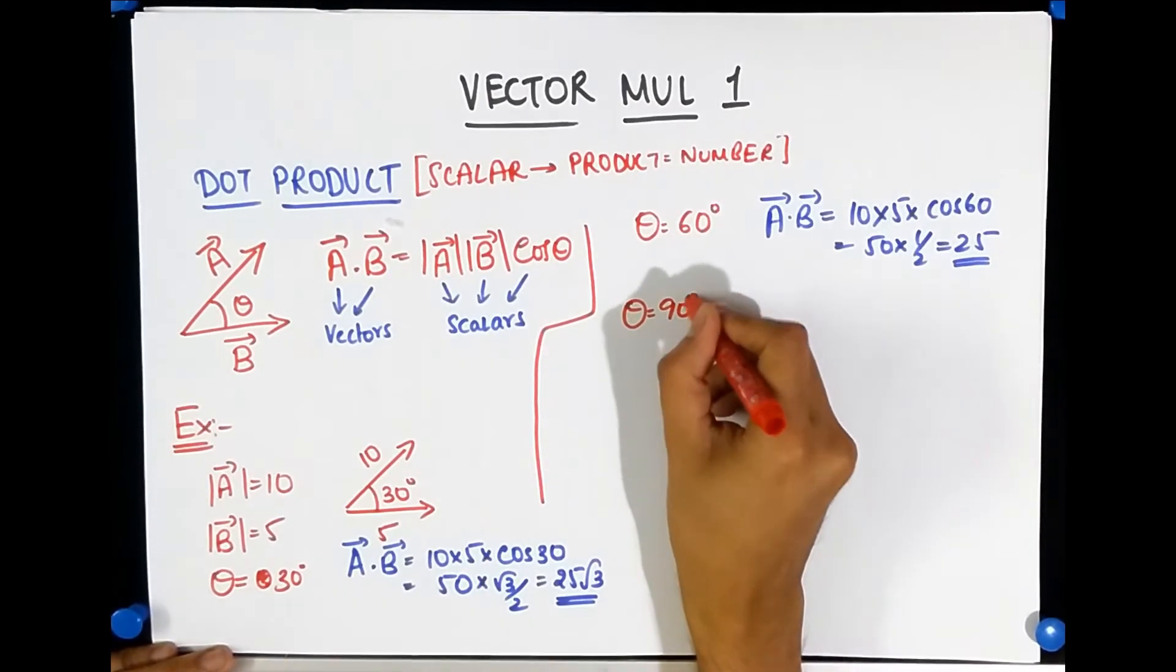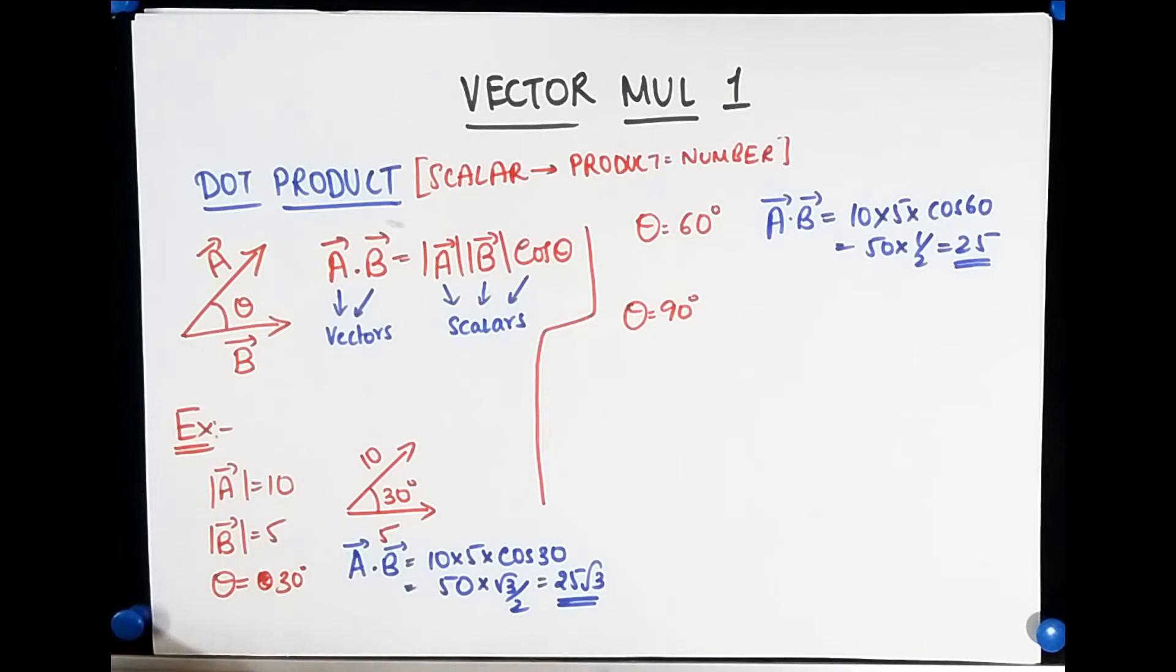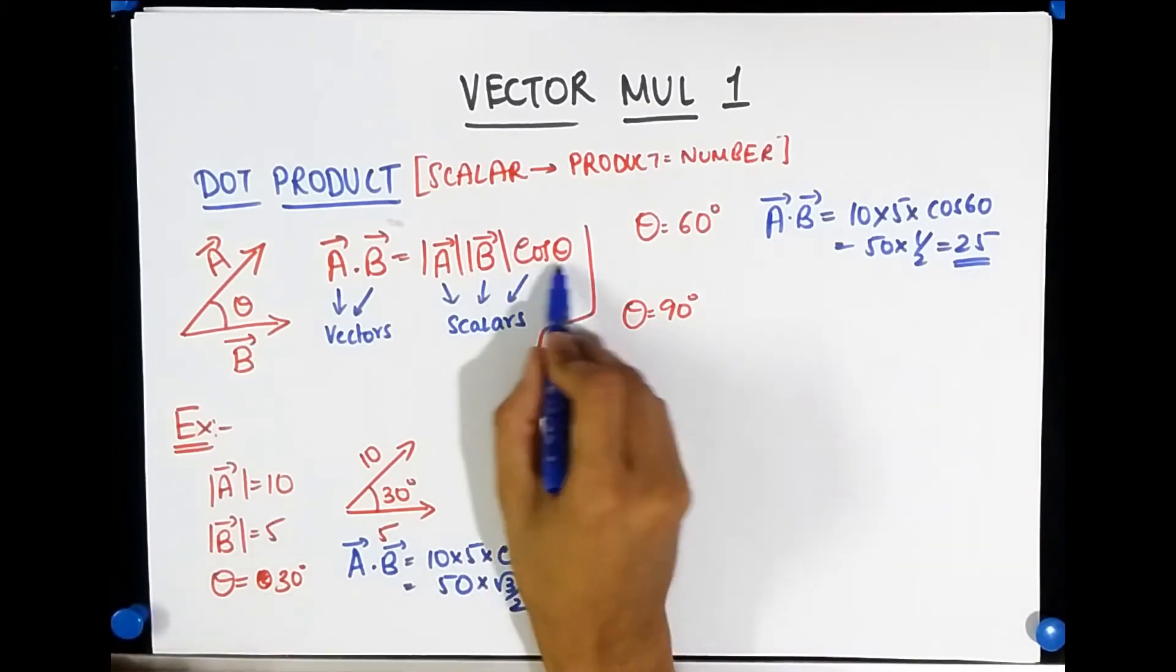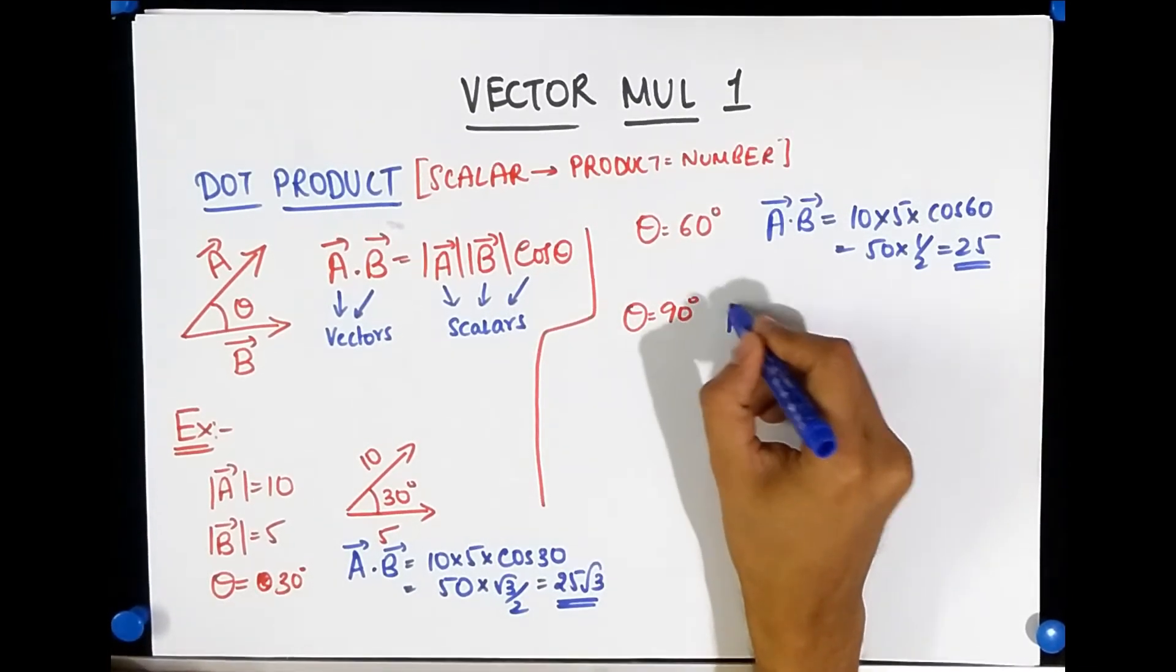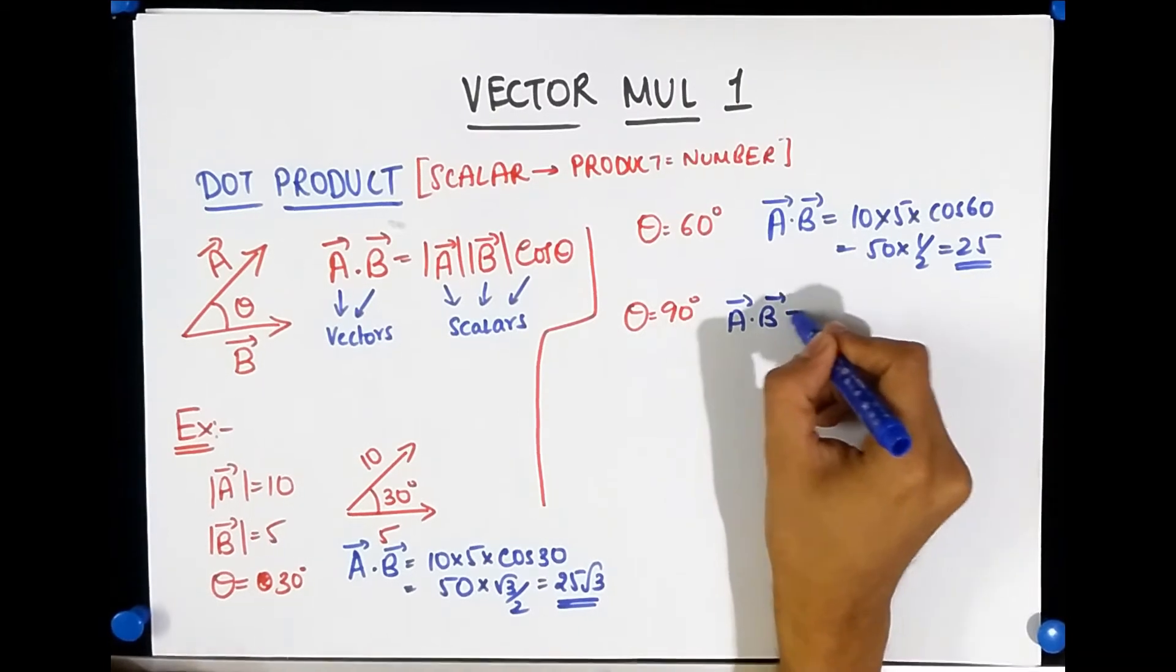Let's increase it all the way to 90 degrees. Well, you know that cos 90 is 0, right? So since cos 90 is 0, A dot B just becomes 0.